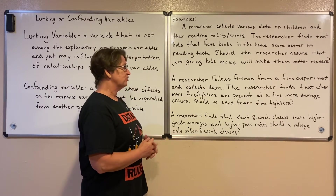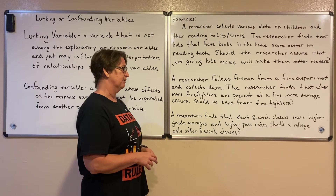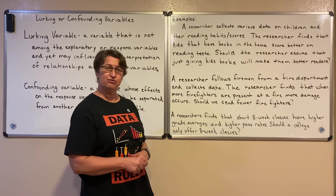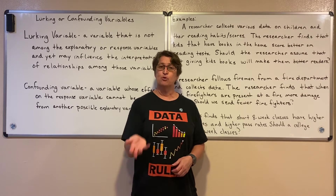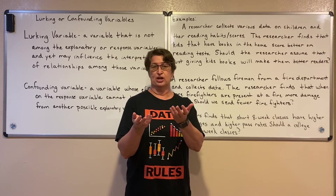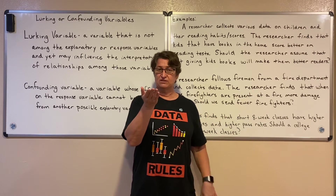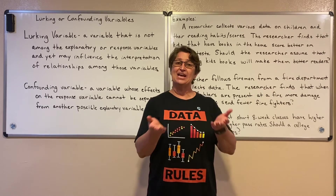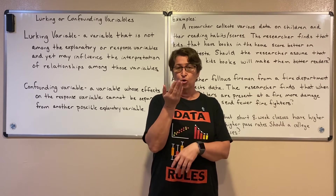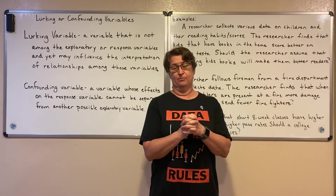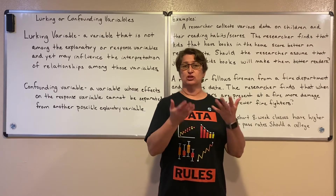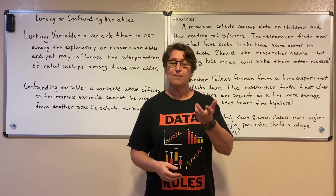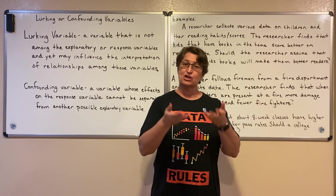Here's another example. A researcher follows firemen from a fire department and collects data. The researcher finds that when more firefighters are present at a fire, more damage occurs. Should we send fewer firefighters? We collected data on the number of firemen and the damage that occurred, and saw that the more firemen sent, the more damage occurred. What's an outside variable that might influence both things? Maybe it's the size of the fire — when you have a large fire, you send more firemen, and a large fire causes more damage. That's the outside variable we're not actually collecting data on.